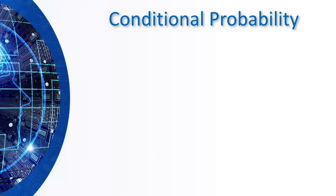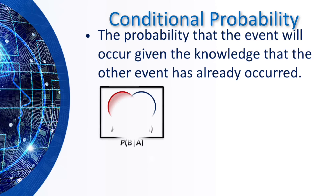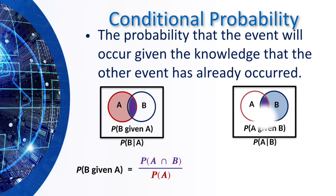Let's move to conditional probability — the probability that an event will occur given the knowledge that another event has already happened. The formula is P(B given A) equals P(A and B) all over P(A), where the numerator is the intersection and the denominator is the probability of the event that has already happened.